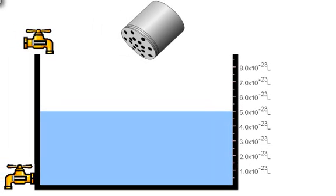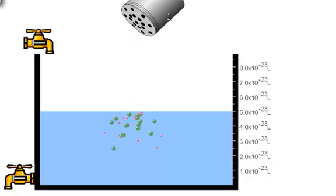Let's take a look at a simulation of a solution. In this case we have table salt, sodium chloride. This is water, H2O, and I'm going to shake in some table salt. The green circles are chloride ions and the red circles are sodium ions. And you can see that when the salt is placed in water it dissolves. The ions separate.